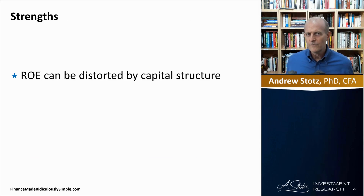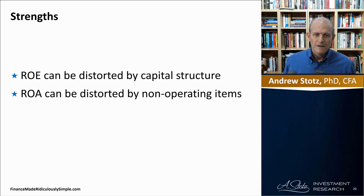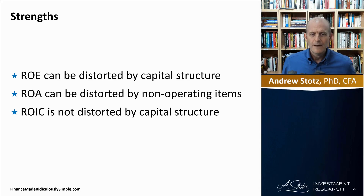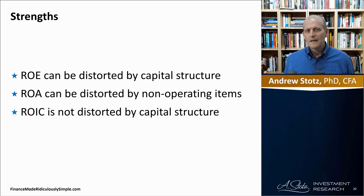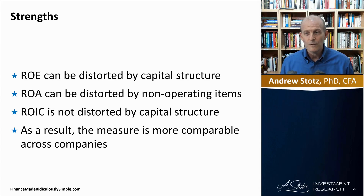What are the strengths of ROIC? ROE can be distorted by capital structure — you may be comparing two companies without realizing one is getting ROE performance through leverage, as we saw in the DuPont analysis. ROA could also be distorted by non-operating items since it uses total assets, but we want to exclude cash and non-operating assets. ROIC is not distorted by capital structure — the net operating profit after tax could be used to pay both debt and equity, making the measure more comparable across companies.